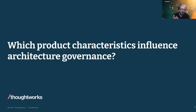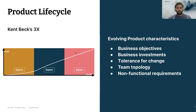So what are those product stages and how do they influence model design? There's a whole variety of different product lifecycle models. The one we borrowed is Kent Beck's 3X model, which characterizes the product lifecycle in three different stages. He posits that depending on what stage of the product lifecycle you're in will determine what types of software practices you should adopt. Adopting incorrect practices at different stages can actually be counterproductive.